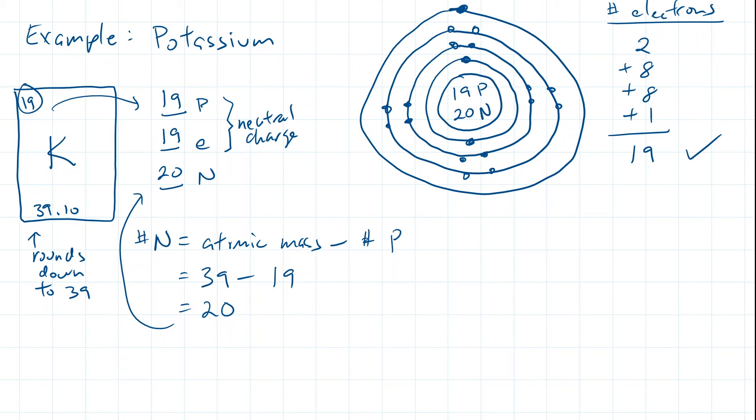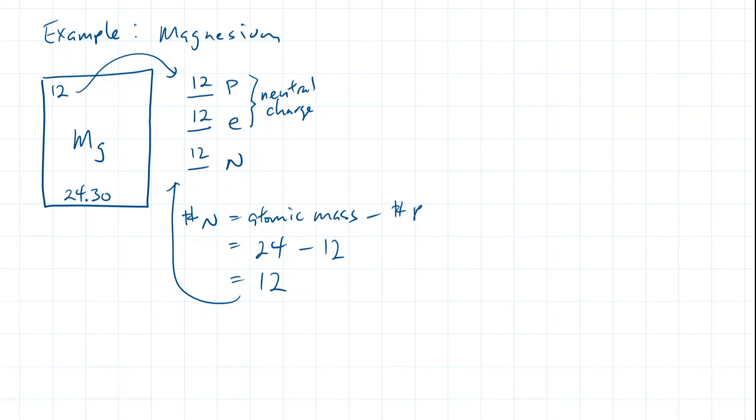Now let's draw the Bohr-Rutherford diagram with magnesium. Magnesium is element number 12 and has an atomic mass of 24.3 rounded down to 24. So magnesium has 12 protons, 12 electrons, and 24 minus 12 gives us 12 neutrons. The first shell has 2 electrons. The second shell has 8 electrons, giving us a subtotal of 10. So the third one must have two more to add up to 12.